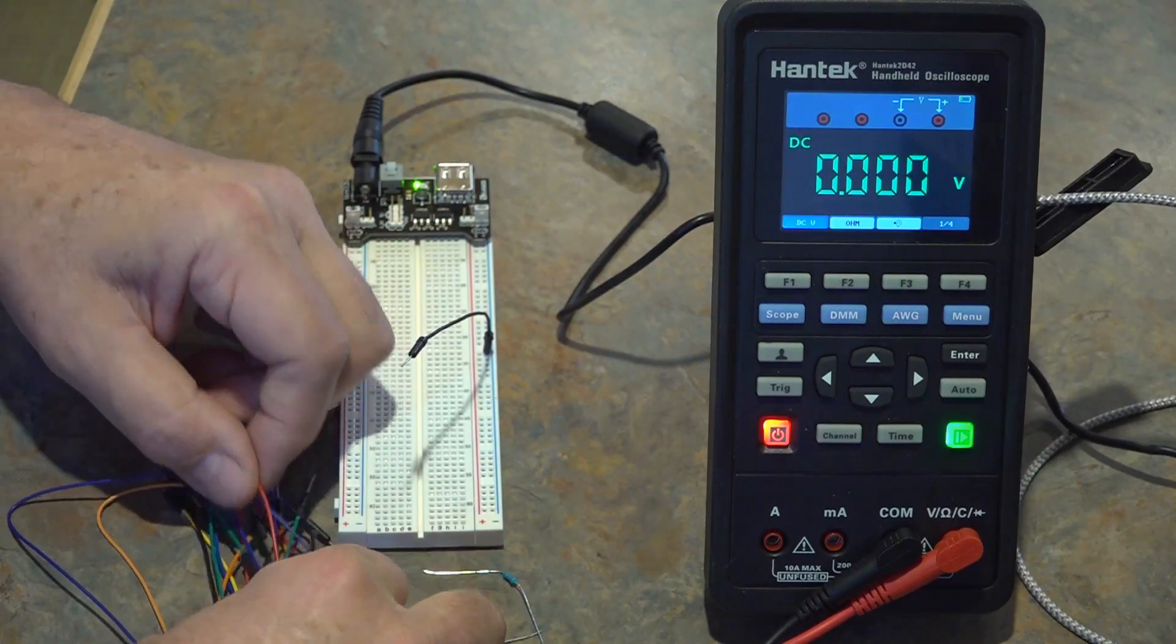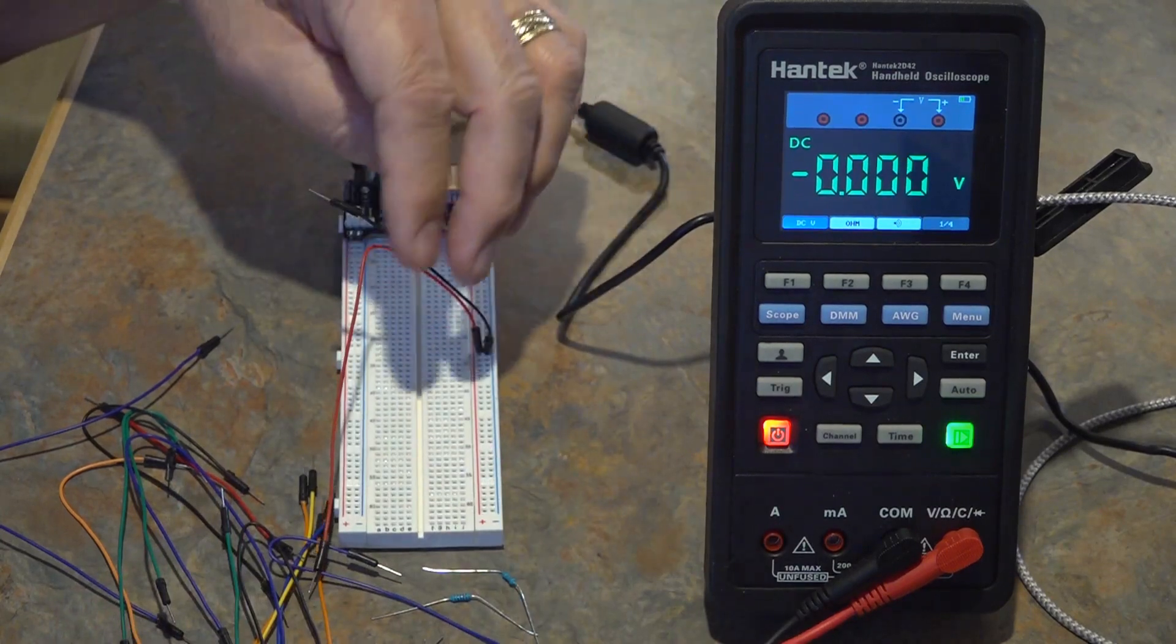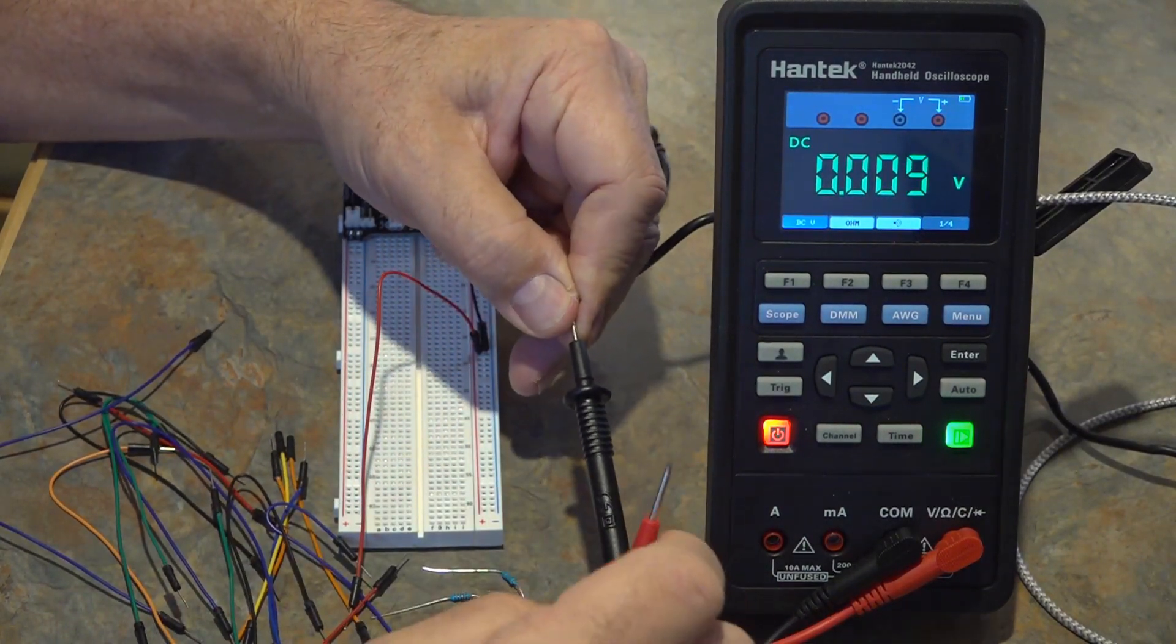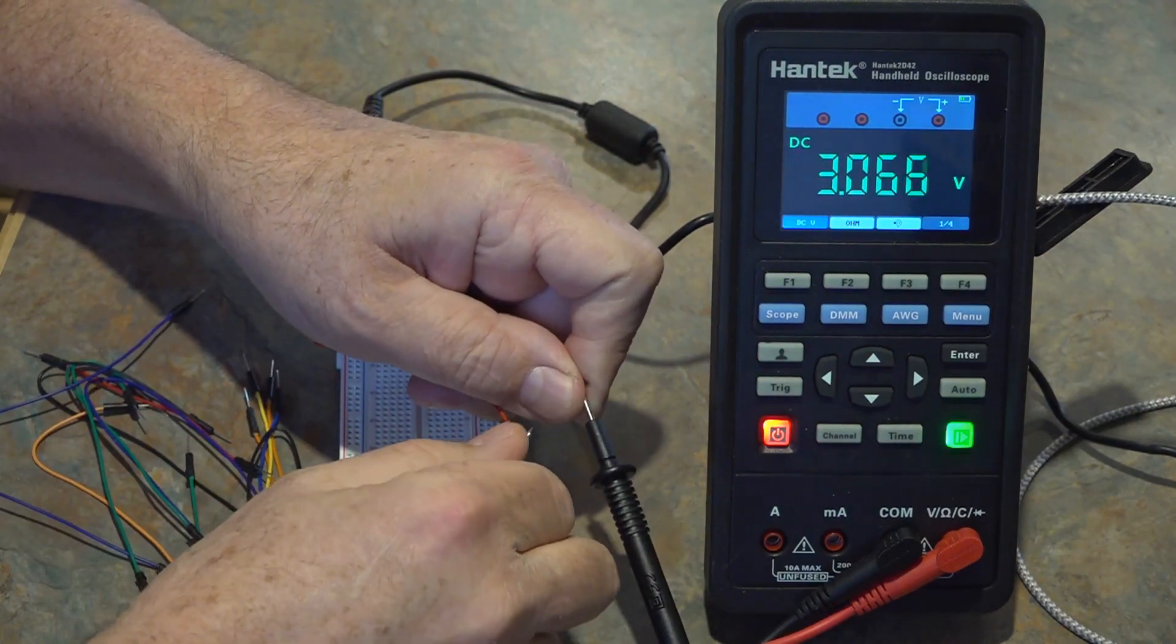So the first thing I'm going to do is check the 3.3 volt supply. I'm going to hook up two of the jumper leads and then connect the test probes from the Hantech which is set in DC multimeter mode and we'll measure that voltage as a reference.